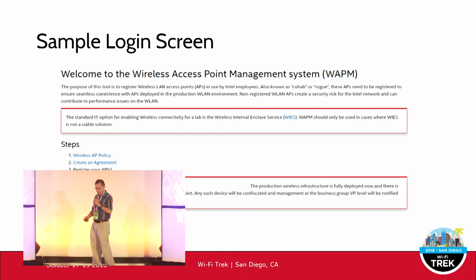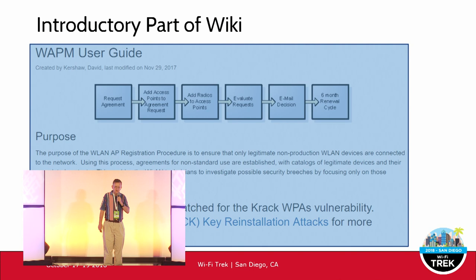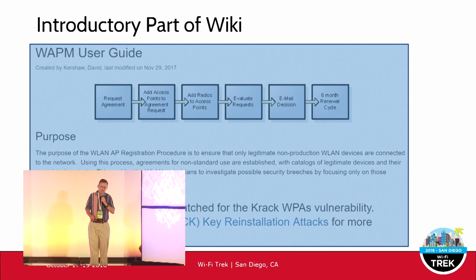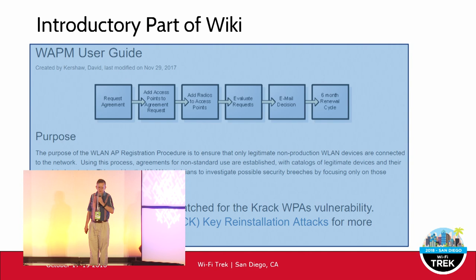Here's one of the wiki entries I created showing the flow. First you request an agreement, then you add an access point underneath the agreement, then you add the radios underneath the access point, and then it goes to evaluation. There are also emails throughout the process to all requesters and approvers.